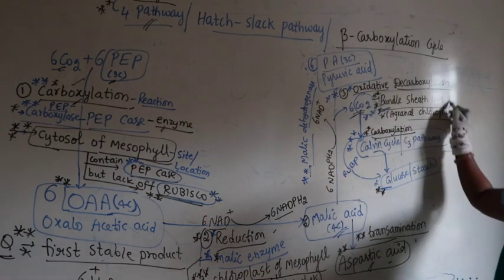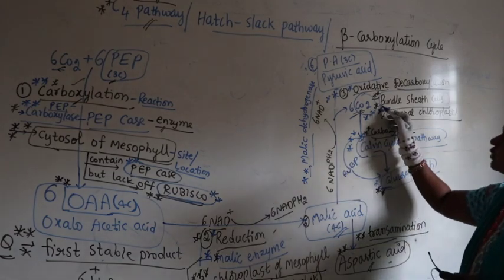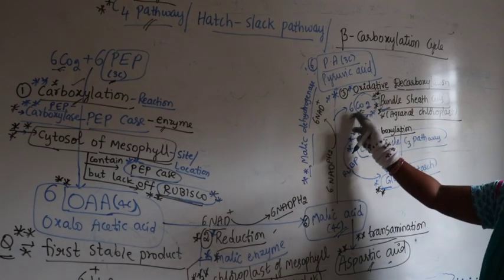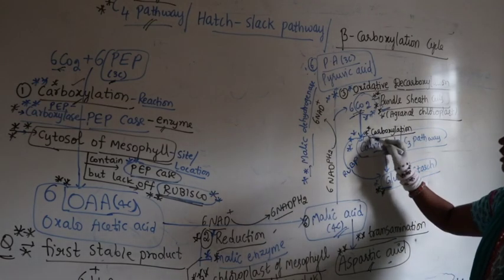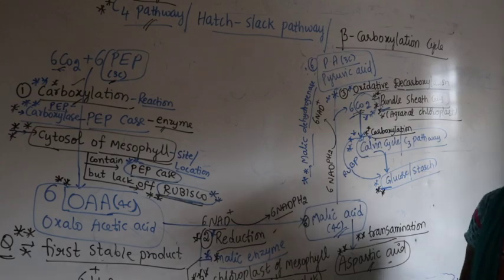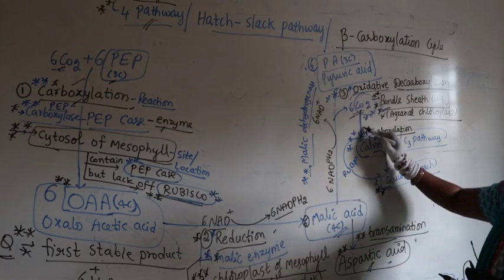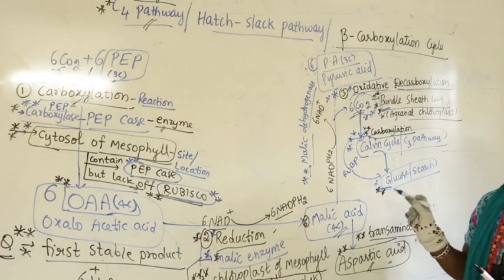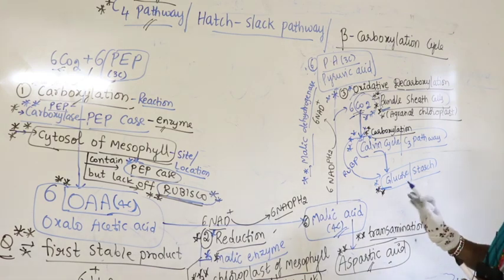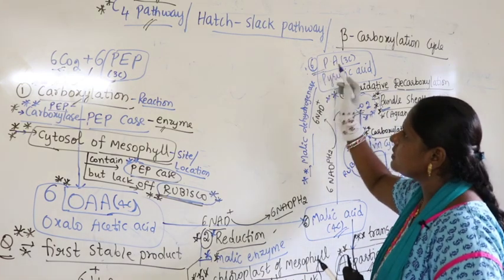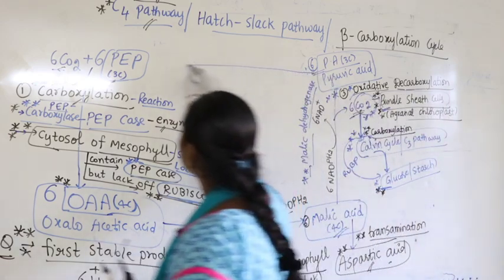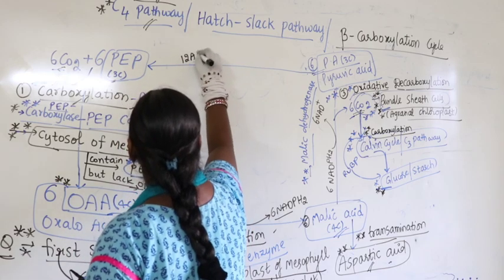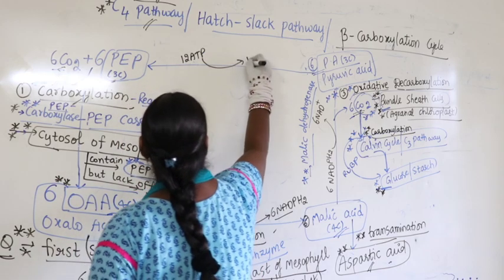In the total C4 pathway, two carboxylations occur. The first is in the cytosol of mesophyll where CO2 is absorbed by the primary CO2 acceptor PEP. The second carboxylation occurs in the bundle sheath cells via the Calvin cycle.